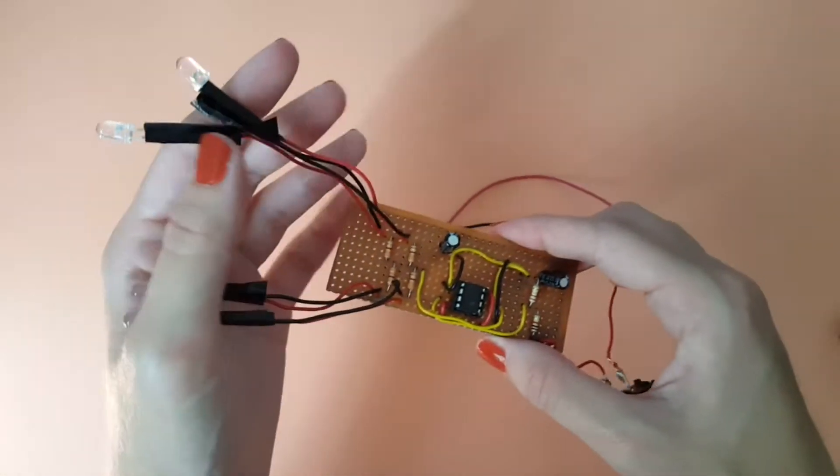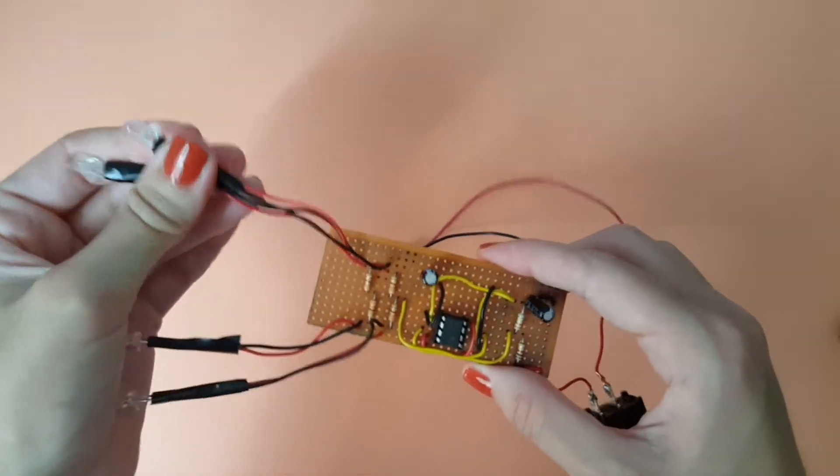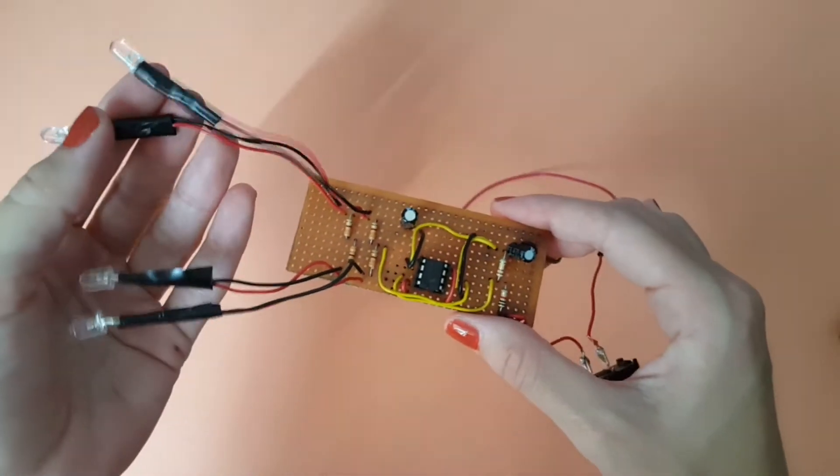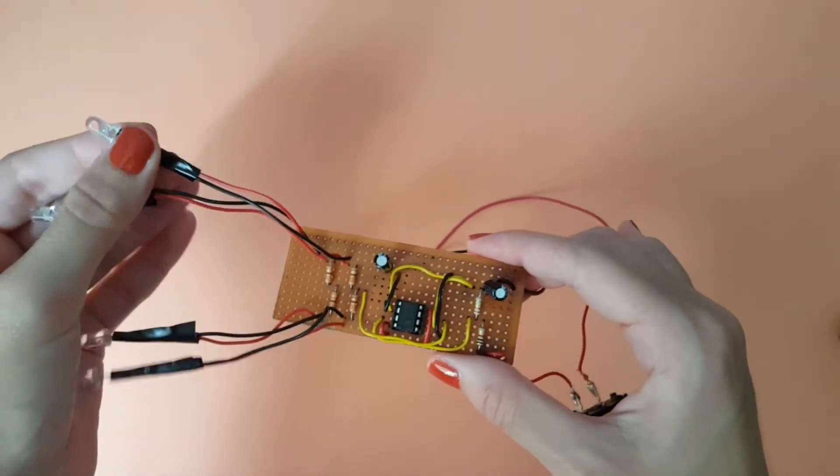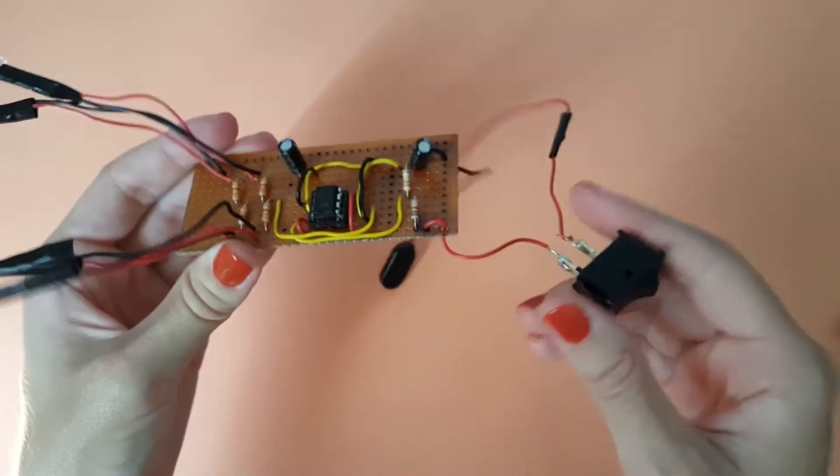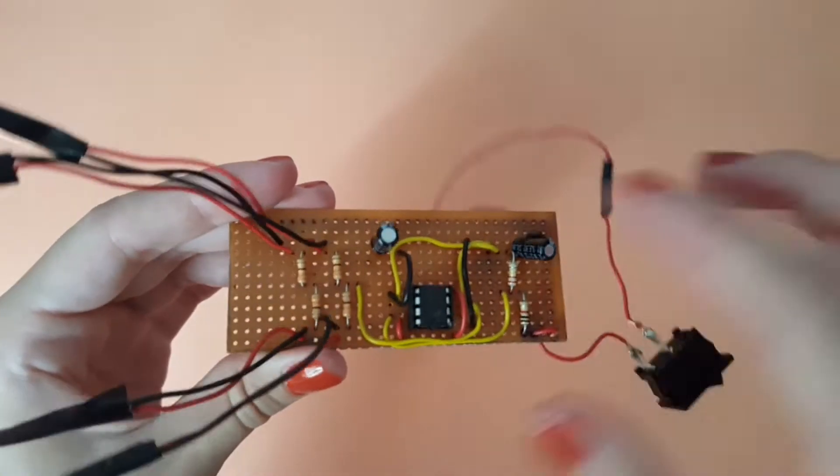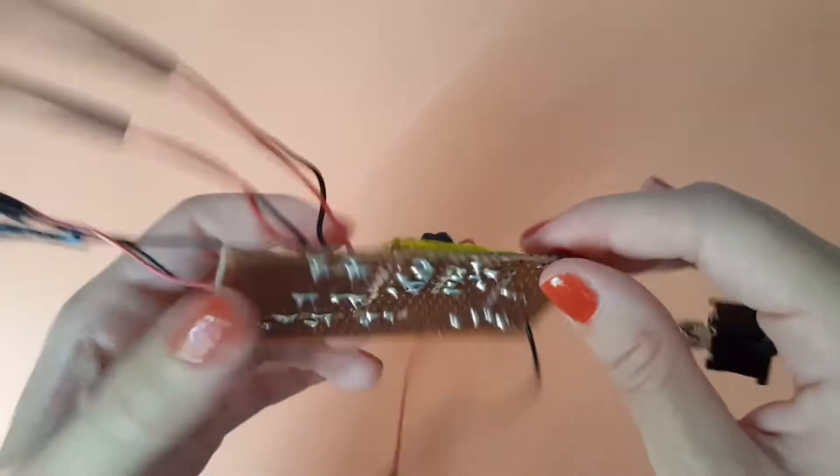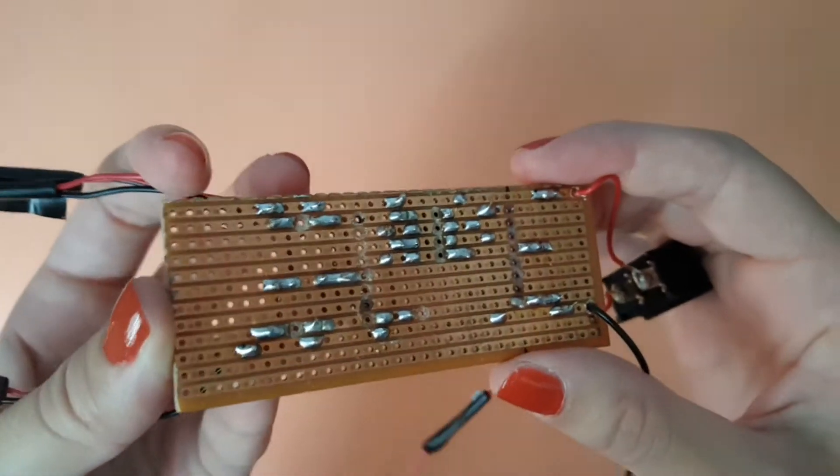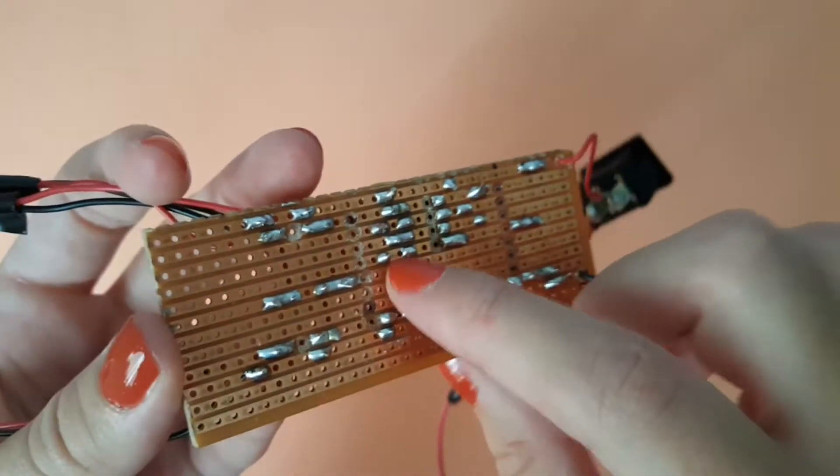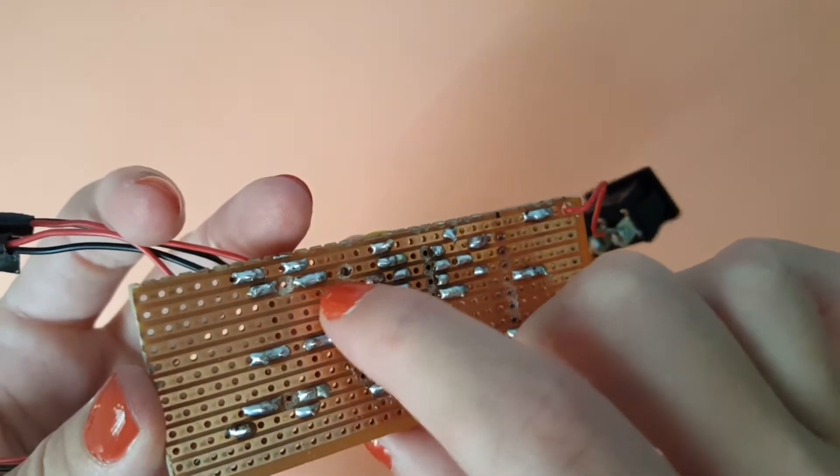Now in this video we're going to be talking about strip boards or vero boards. A strip board is used by hobbyists and electronic enthusiasts to solder their circuits in one complete unit. As you can see from the back, you can see the copper strips and the solder joints.